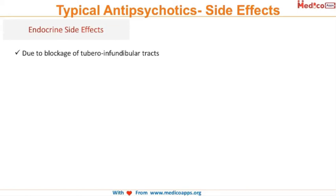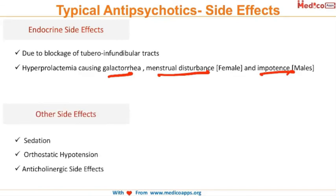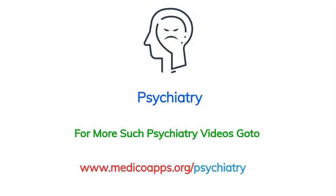Endocrine side effects: due to blockage of the tuberoinfundibular tract, there is hyperprolactinemia causing galactorrhea, menstrual disturbances in females, and impotence in males. Other side effects include sedation, orthostatic hypotension, and other anticholinergic side effects. These are the typical side effects of typical antipsychotics.